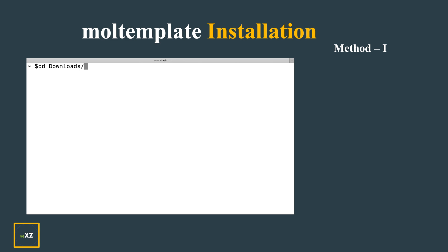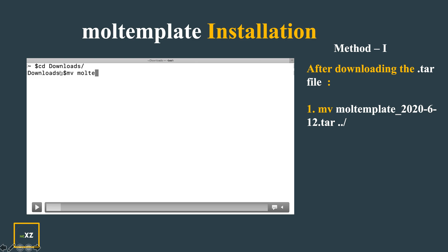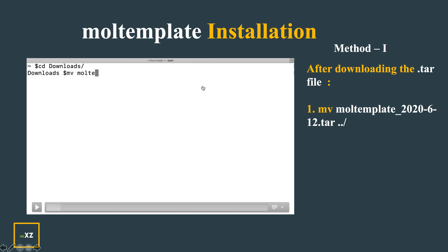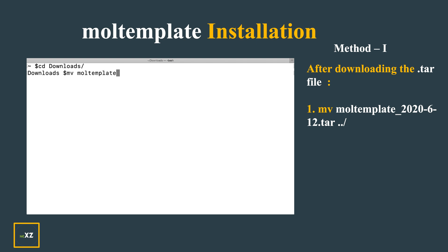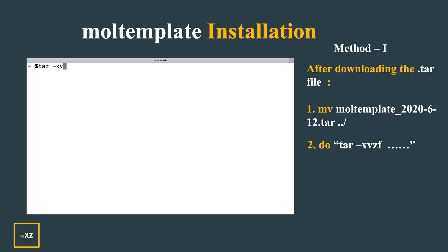In Method 1, you download directly and the downloaded file stores in the download folder. You move the tar file to the home folder — not in the download folder, but to the home folder. Then you go back to the home folder, list the contents, and you can see the tar file is there. Now you use the tar -xvzf command to extract the tar file.